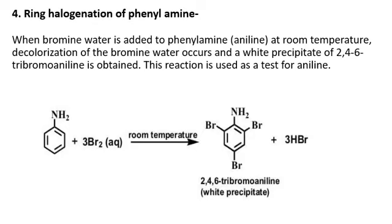Next is the bromination of phenylamine. When bromine water is added to phenylamine, such as aniline at room temperature, a decolorization of bromine water occurs and a white precipitate of 2,4,6-tribromoaniline is obtained.